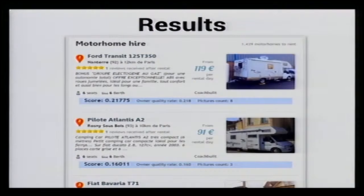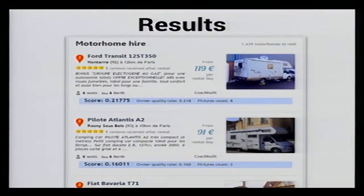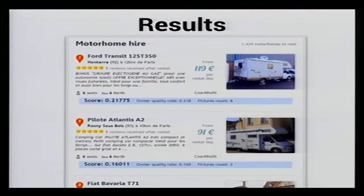Let's see what happens now. The first vehicle has a description, it's 12 kilometers from Paris, inside our decay circle. It has reviews, 8 pictures, and a good owner quality rate. You can see the score is directly dependent on distance, owner quality rate, and picture count — all three are better for the first and second results. We can now say that if you want to rent a vehicle from Paris, the first one will probably provide a better experience on our website — just by modifying the search query.